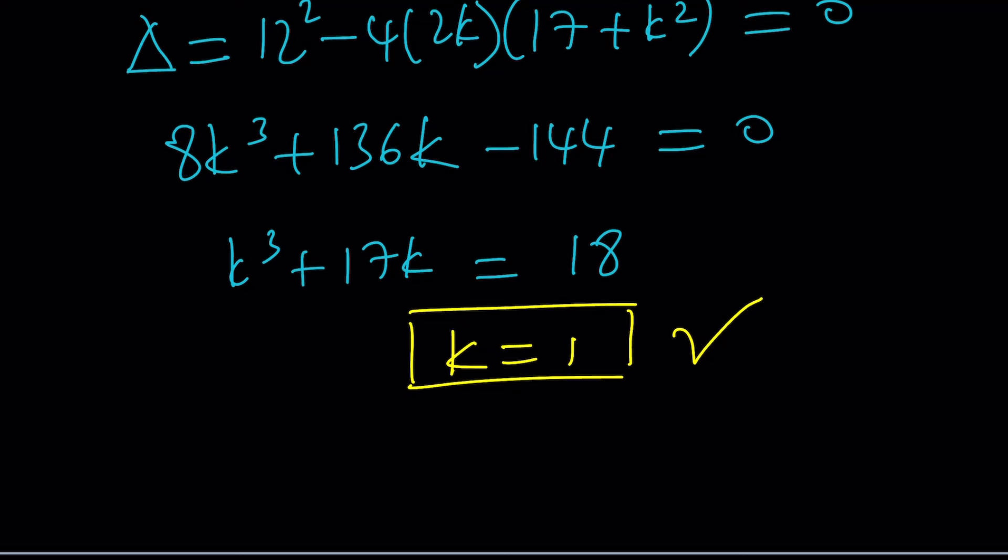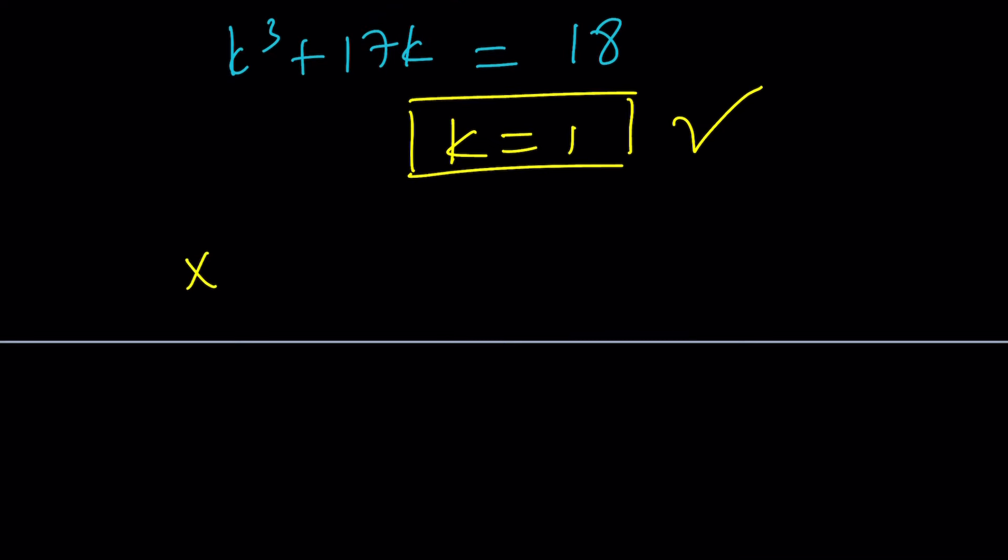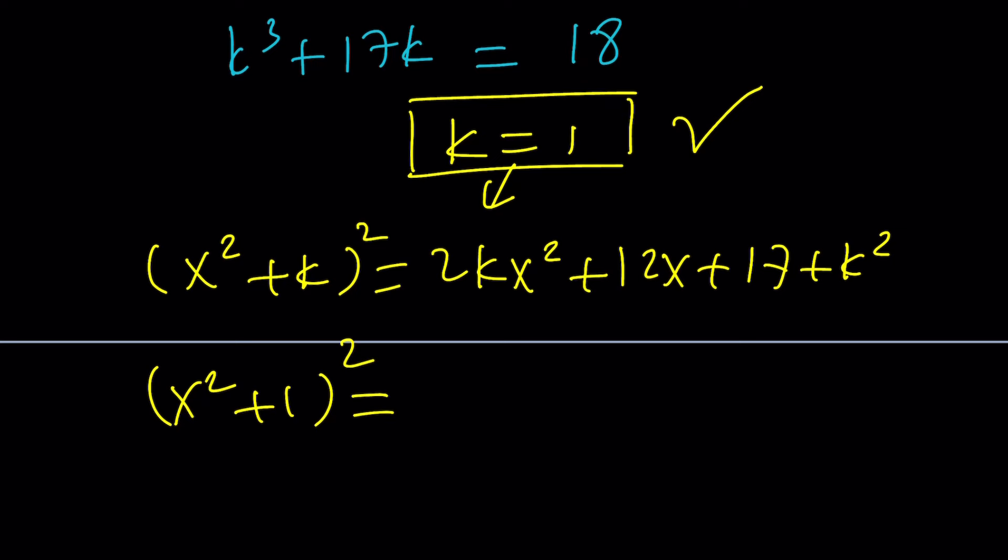So let's go ahead and plug it in. We had x squared plus k squared equals 2k x squared plus 12x plus 17 plus k squared. And now we're going to replace k with 1. That's going to give us x squared plus 1 squared equals 2x squared plus 12x plus 17 plus 1, which is equal to 18. Awesome.